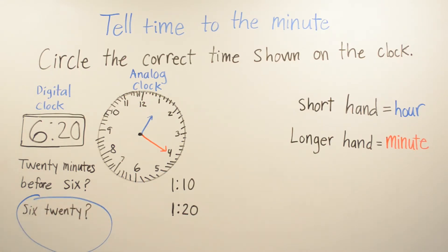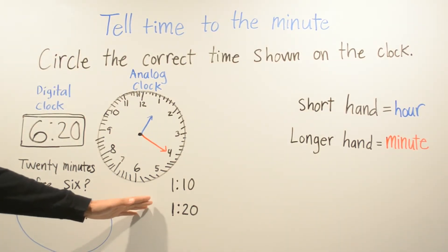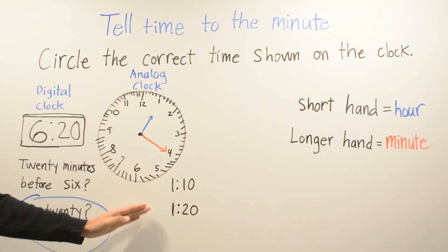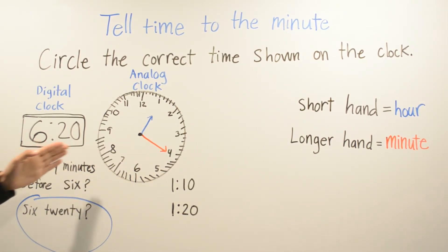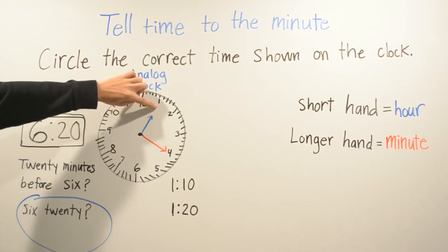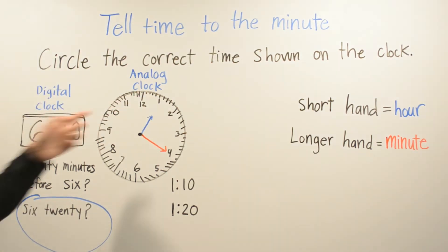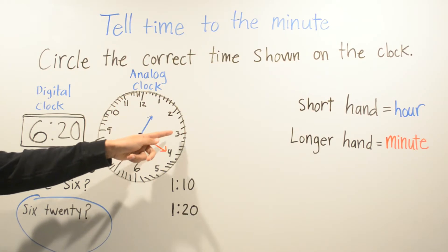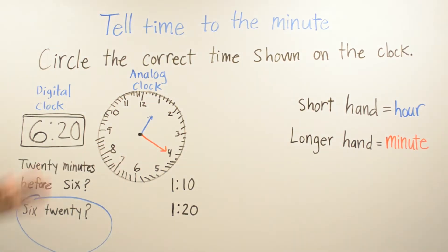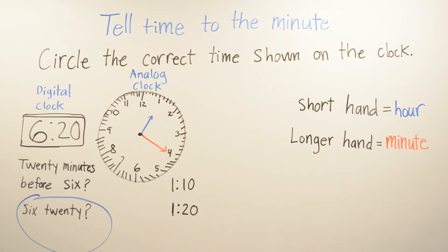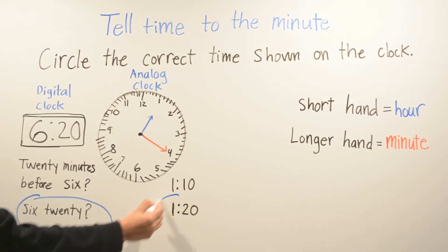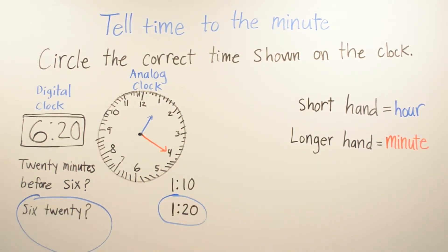Let's move on to the analog clock. We have to find which one is the right answer — is it 1:10 or is it 1:20? The hour is 1, but we don't know how many minutes. So let's find out: 5, 10, 15, 20. So it's 1 with 20 minutes, and your correct answer is 1:20.